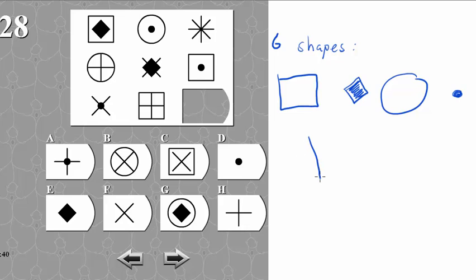Then we have a cross and a tilted cross. These are the six shapes.